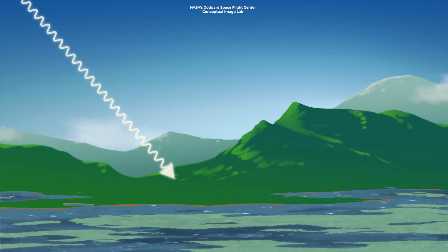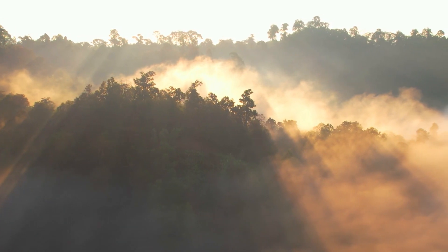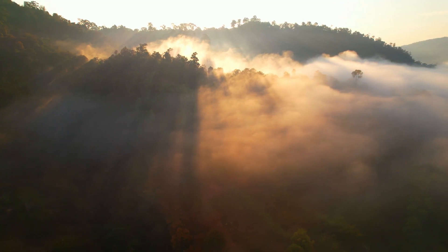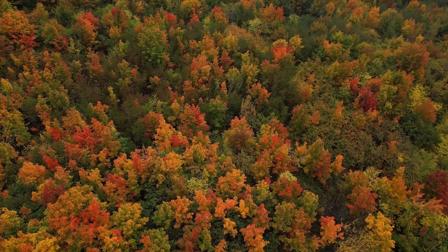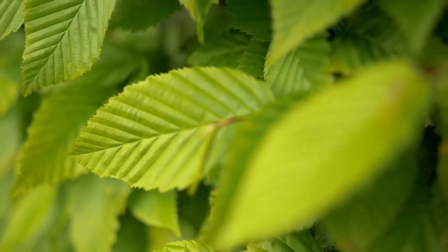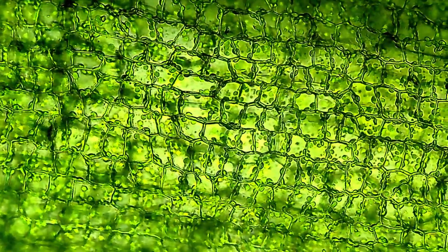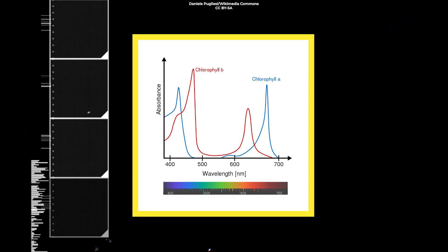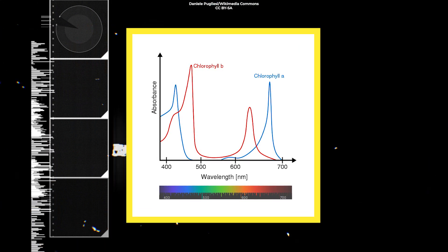When light bounces off the surface of a material or passes through a gas, certain wavelengths of the light are more likely to remain trapped in the gas or material's surface than others. This selective trapping of wavelengths of light is why objects are different colors. Leaves are green because chlorophyll is particularly good at absorbing light in the red and blue wavelengths. As light hits a leaf, the red and blue wavelengths are absorbed, leaving mostly green light to bounce back into your eyes.